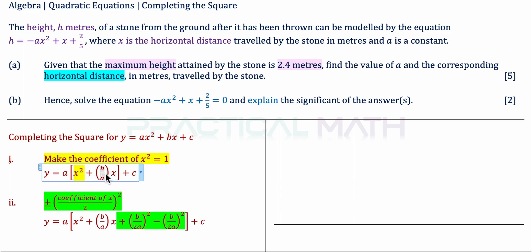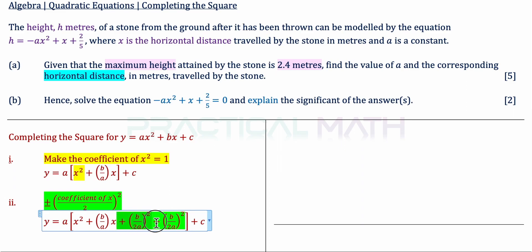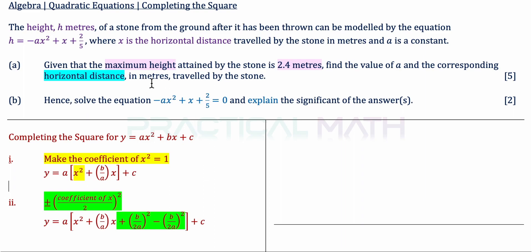The coefficient of x over 2 gives us b over 2a, and we square it, introducing two new terms — plus and minus (b over 2a) squared — within Step 2 of completing the square. Now, before we go to Step 3, let us apply completing the square to Part A of our problem: h equals negative ax squared plus x plus 2 over 5.